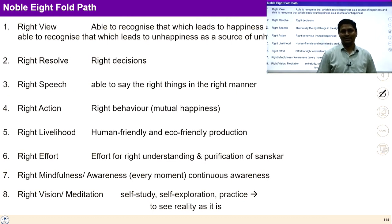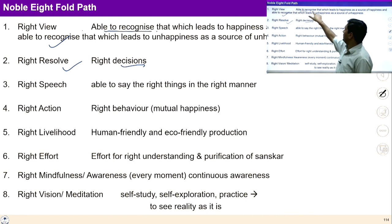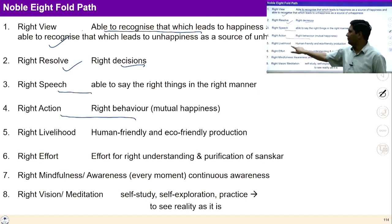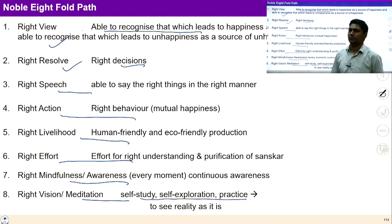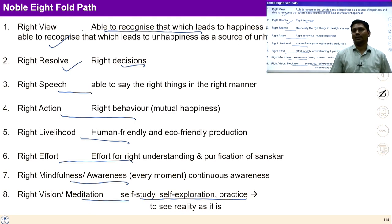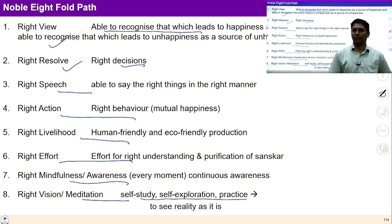Now we can sum up the whole lecture. Right view means being able to recognize which leads to happiness and which leads to unhappiness. Right resolve means right decision. Then right speech, right action, right livelihood, right effort, right mindfulness, and right vision — self-study and self-expression to see the reality as it is. If we follow these eight steps, we get self-organized and our actions ensure harmony with other human beings and the rest of nature. This is one formulation in our tradition which tells us how to ensure harmony within myself and how to ensure harmonious relation with the rest of nature.